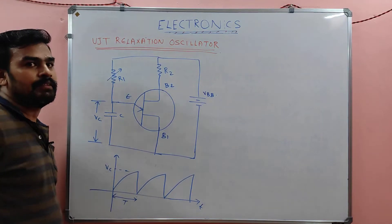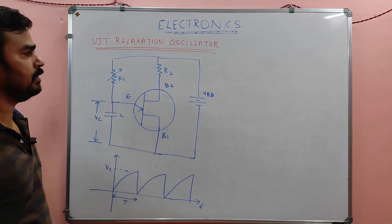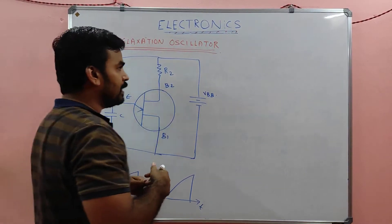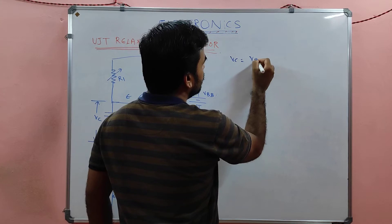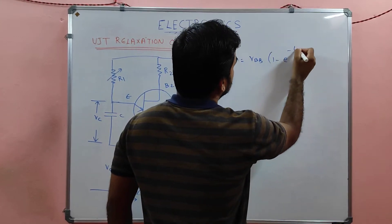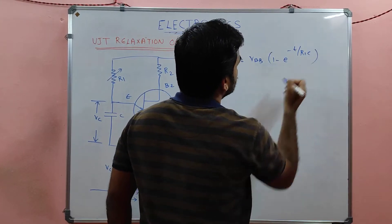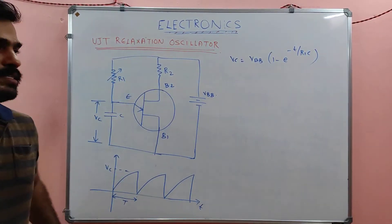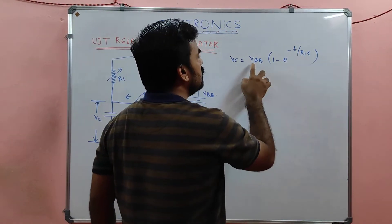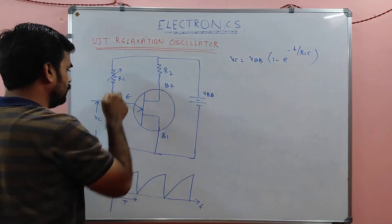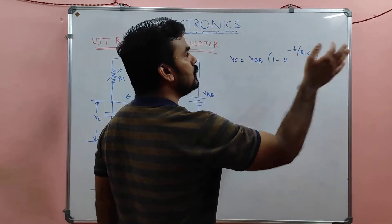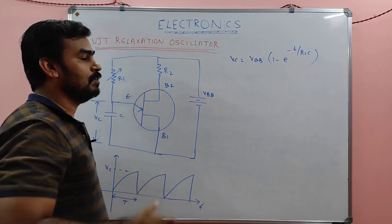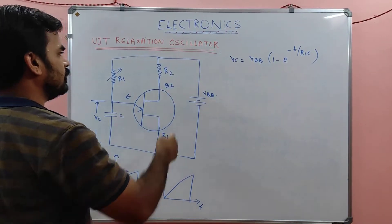When we turn on VBB, the capacitor charges through R1. The capacitor voltage is given as: VC = VBB × (1 − e^(−T / R1C)). This is the general equation for capacitor charging voltage. We can validate it: when T equals infinity, e^(−∞) equals 0, so VC equals VBB, which is the maximum value.